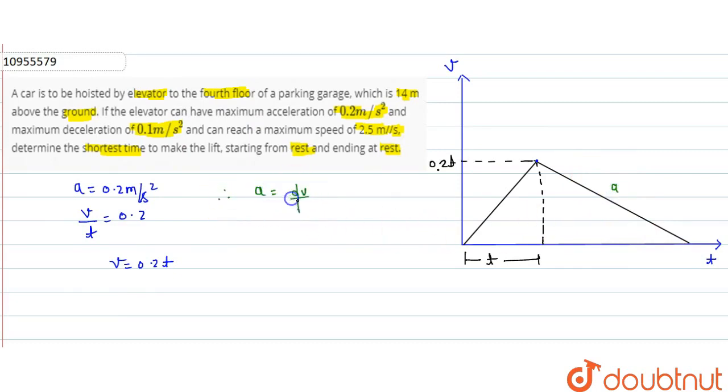This acceleration is dv over dt. Velocity we know is 0.2t. And the time we have t dash, we don't know. This deceleration is 0.1 equals to 0.2t upon t dash.